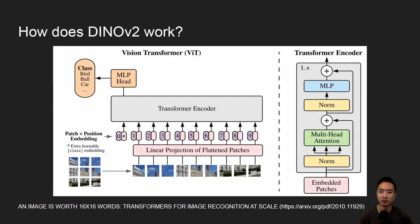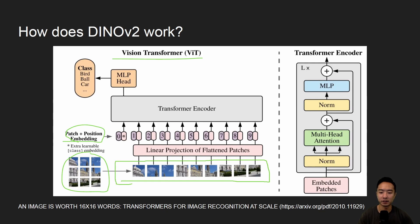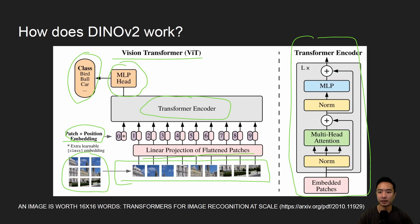So how does DINOv2 work? DINOv2 is based on the Vision Transformer. Ever since the rise of large language models, a lot of interest has grown in using Transformers for vision. The idea is that you have patch and position embeddings — you break up an image into different parts, do a linear projection of your patches, pass it into a Transformer encoder, then into an MLP head to get a class output. DINOv2 really focuses on how it trains the ViT. You can check out the paper 'An Image is Worth 16x16 Words' for more details on Transformers.